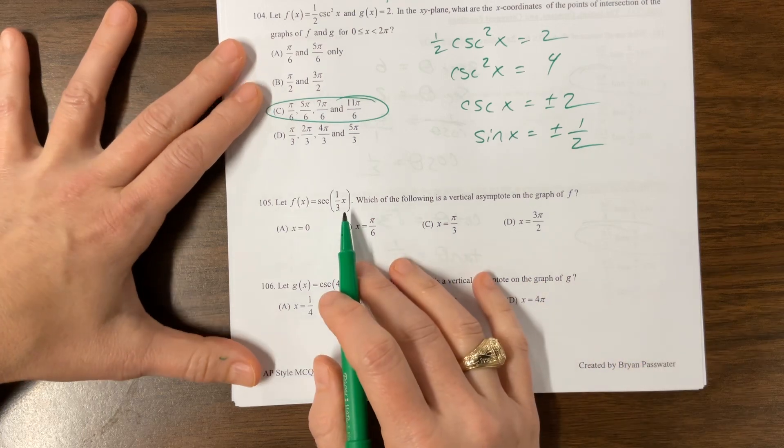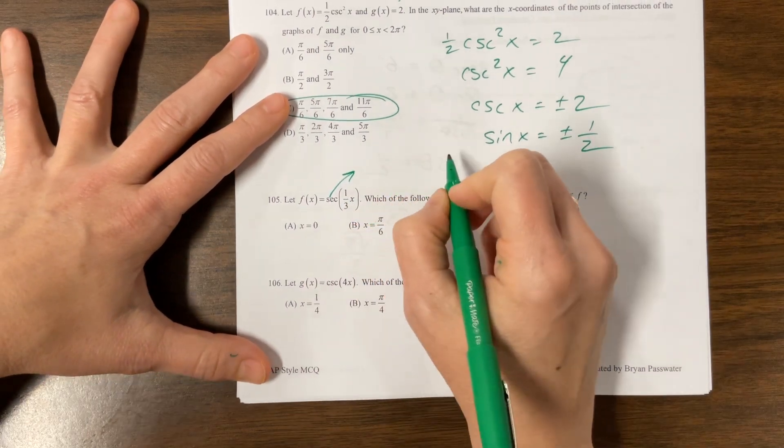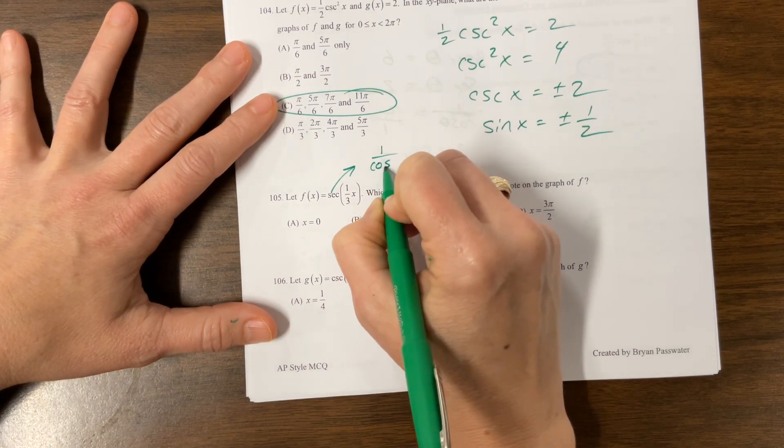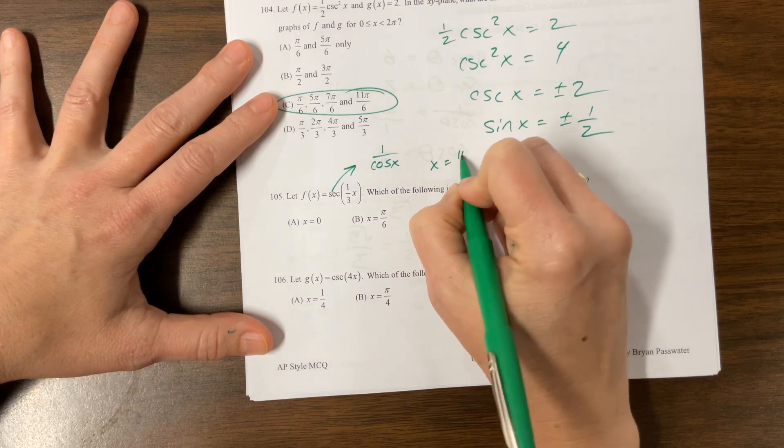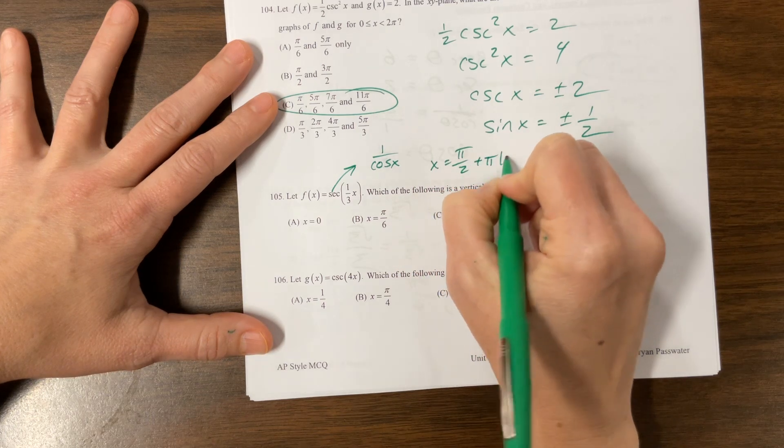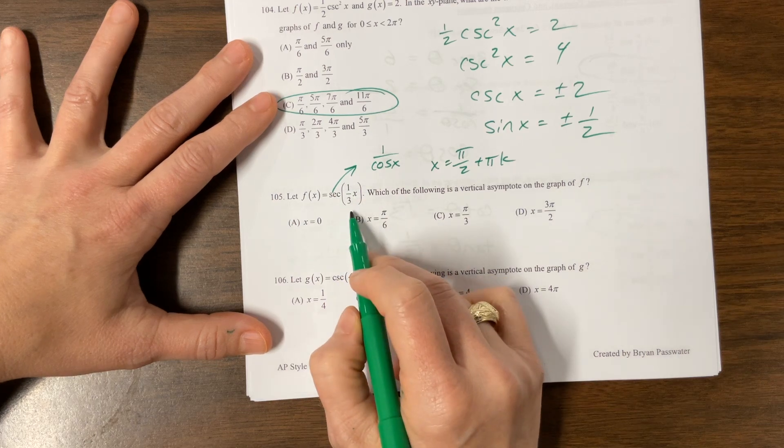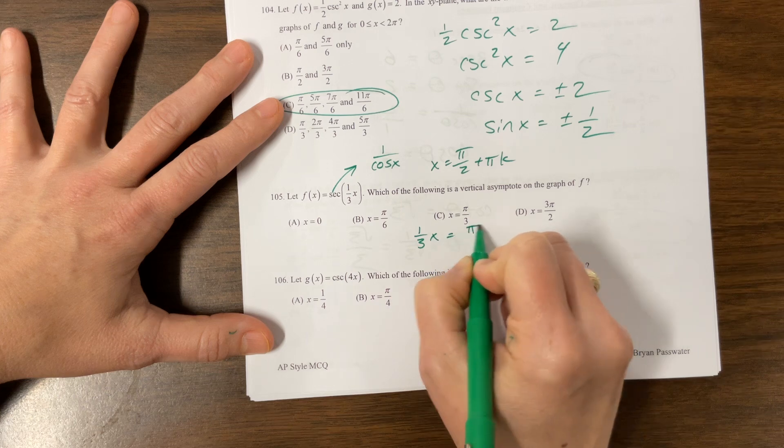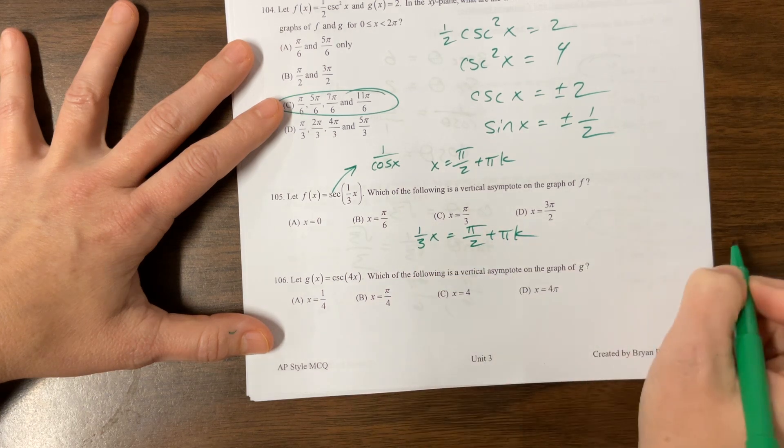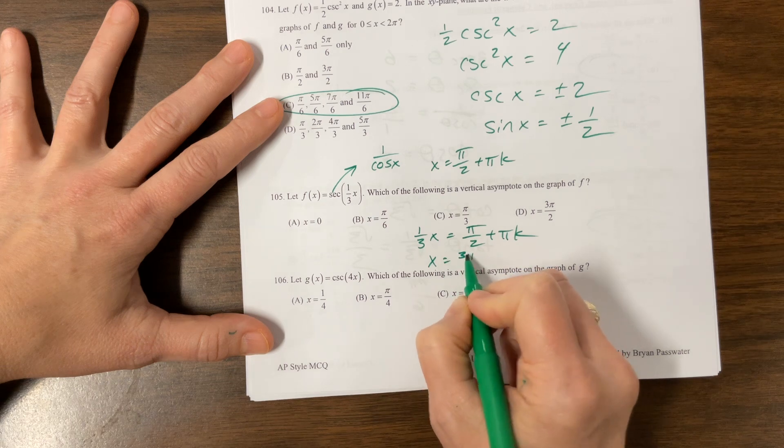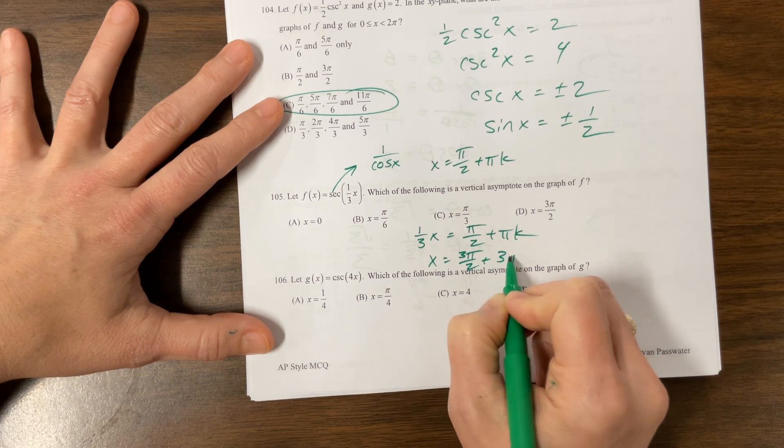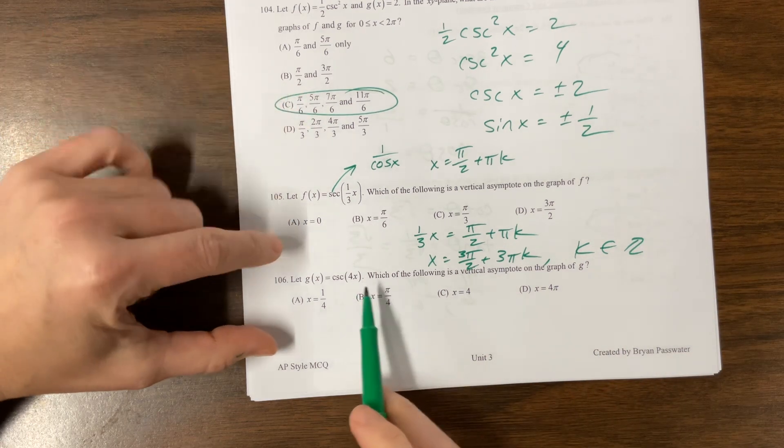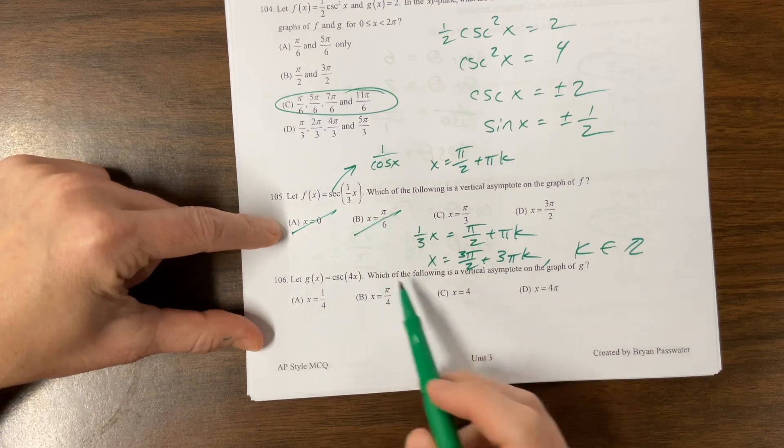Where are the vertical asymptotes? Secant is 1 over cosine. When does cosine have zeros? Cosine has zeros at pi over 2 plus pi k. So what I'm going to do is take all this stuff right here that might affect the asymptote and set it equal to the original asymptote. Multiply everybody by 3 to clear this out. X is equal to 3 pi over 2 plus 3 pi k, where k is an element of the integers. Which of the following? No, no, no, yes.